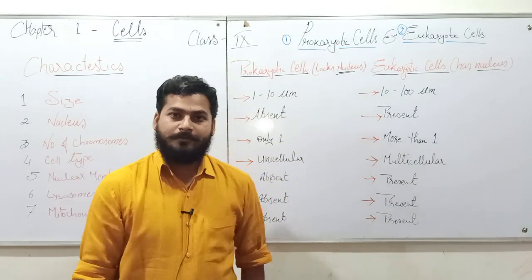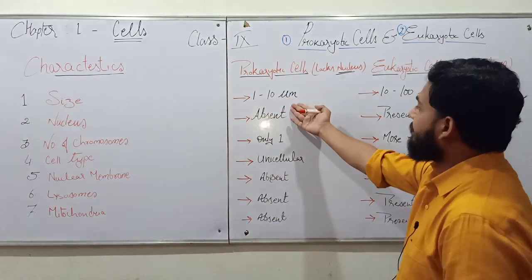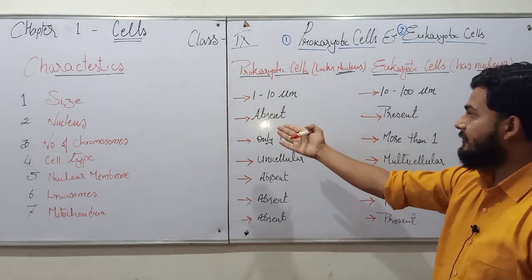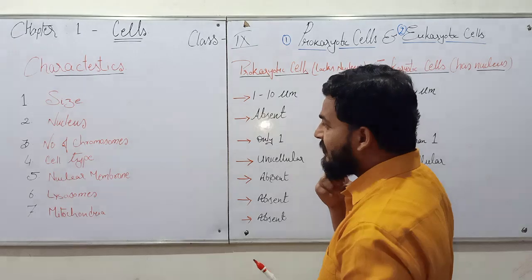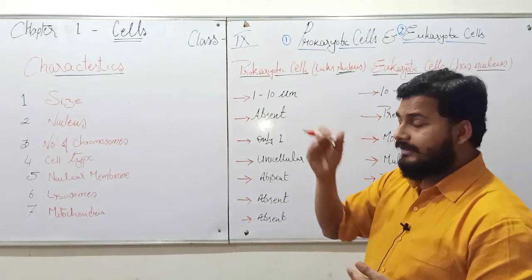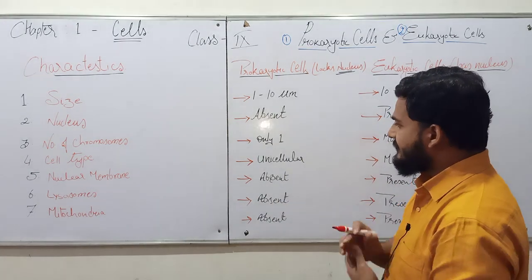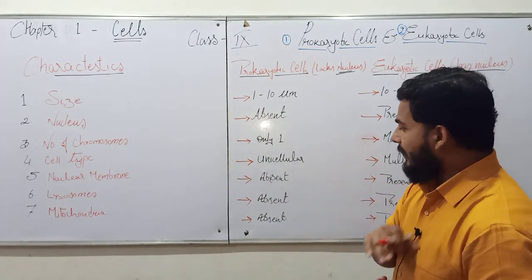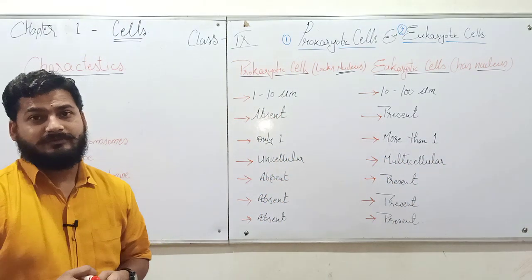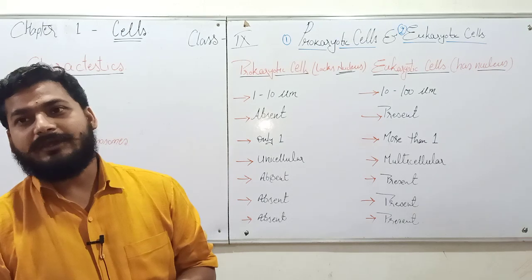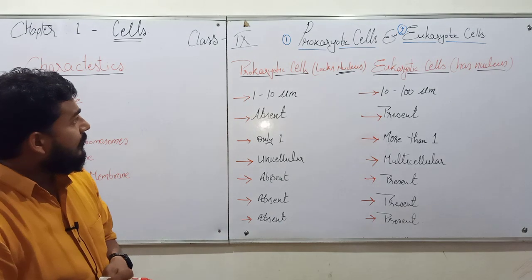So to summarize: prokaryotic cells lack nucleus, eukaryotic cells possess nucleus. Size ranges from 1 to 10 micrometers for prokaryotic and 10 to 100 micrometers for eukaryotic. Nucleus is absent in prokaryotic and present in eukaryotic. Number of chromosomes is only one in prokaryotic cells while it is higher in eukaryotic cells. Cell type is unicellular for prokaryotic and multicellular for eukaryotic. Lysosomes and mitochondria are absent in prokaryotic and present in eukaryotic cells.